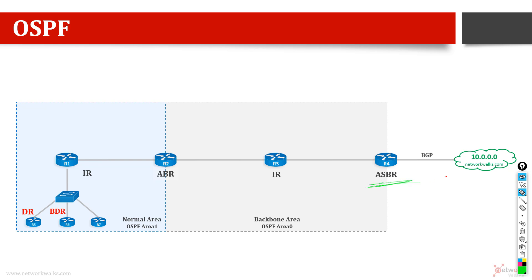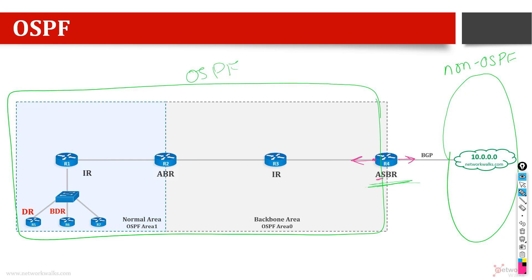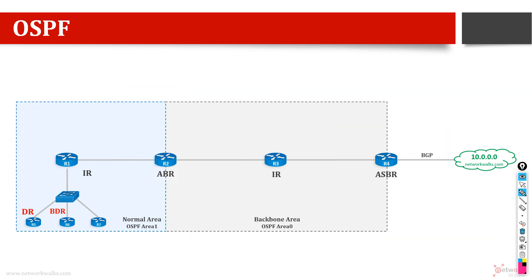The fourth type is called ASBR. This whole network is the OSPF domain, and outside it is non-OSPF. Router number four has one interface within OSPF and one interface outside the autonomous system. This is called an autonomous system boundary router. The ABR sits between two areas of OSPF, while the ASBR connects OSPF to an outside domain — like an international seaport connecting a country to the outside world, while the ABR is like a border between provinces within the same country.